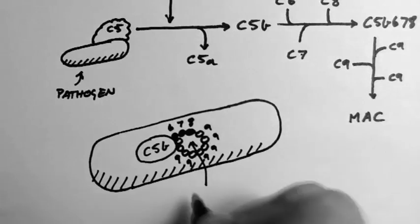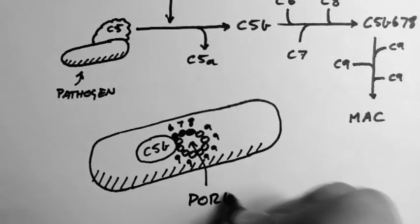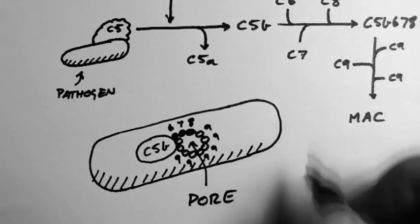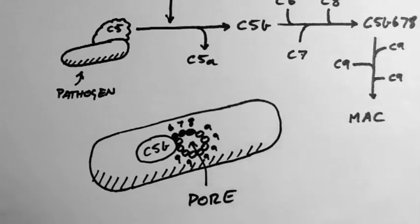Now these pores compromise the membrane integrity of the pathogen. And if enough pores form, then the pathogen will die. And that's how complement helps protect the body from pathogens.